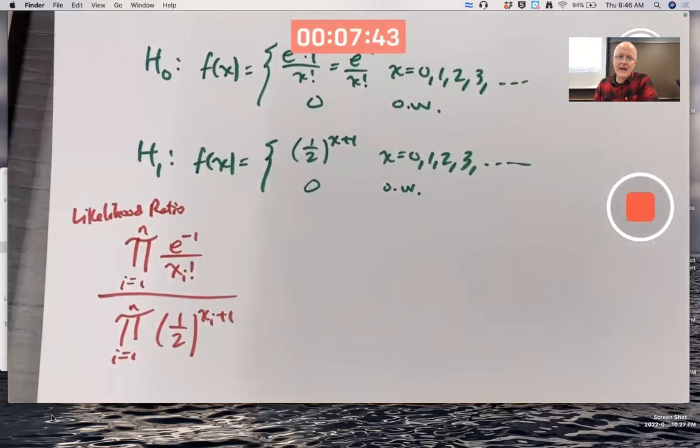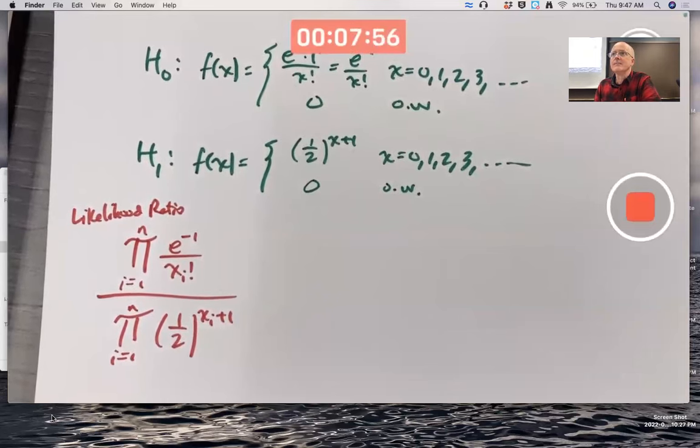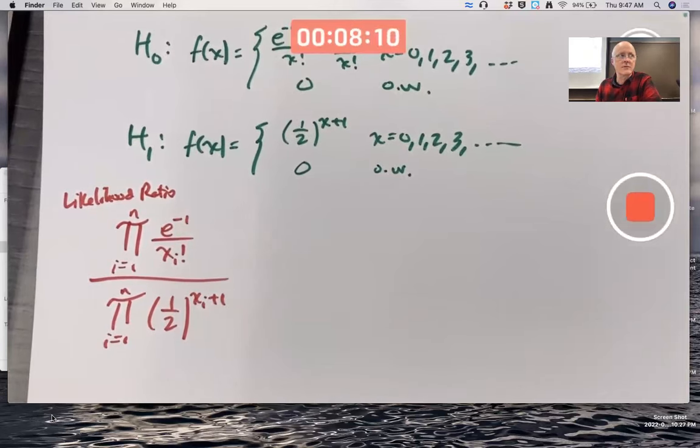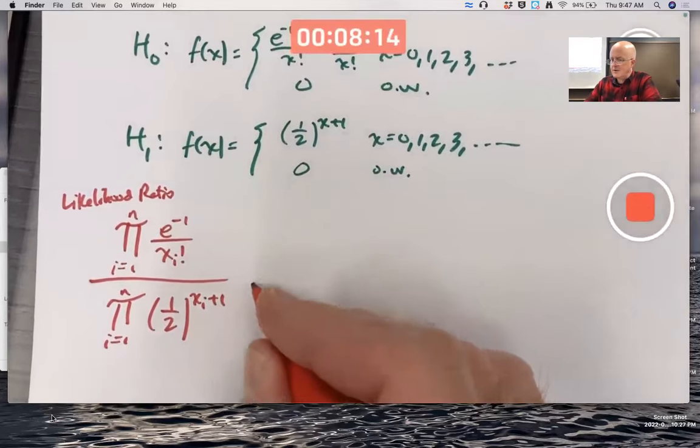So this would still be the likelihood ratio. And we could still say this being less than or equal to some number would be what we would use to define a best critical region. That makes the test most powerful, maximizes the power. It's going to be less than or equal to k. What is k? It depends on what alpha is. K and alpha are related. But that kind of inequality is what defines the best critical region, according to the Neyman-Pearson lemma in a more general form.